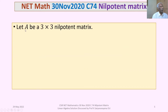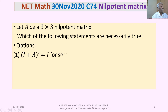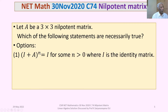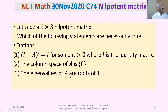The problem is: let A be a 3×3 nilpotent matrix. Which of the following statements are always true? Option 1: (I + A)^n = I for some n greater than 0, where I is the identity matrix. Option 2: The column space of A is the singleton set {0}. Option 3: The eigenvalues of A are the roots of unity. Option 4: A cubed is diagonalizable.